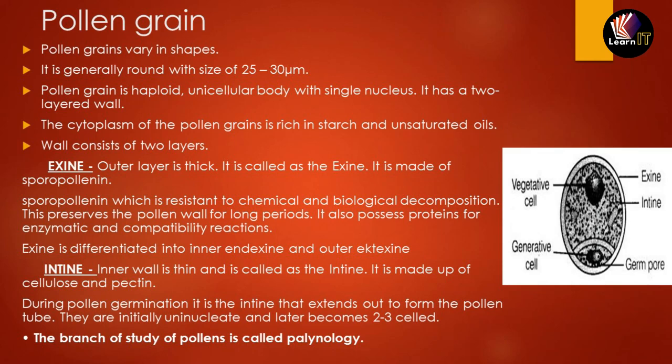During pollination and germination, it is the intine that extends out to form the pollen tube. The pollen tube grows through the style during pollen-pistil interaction. The cytoplasm extends out of the pollen tube; the pollen grain is initially uninucleate and later becomes a two-celled structure. The branch of science that studies only pollens is called palynology.